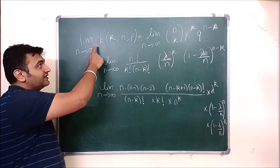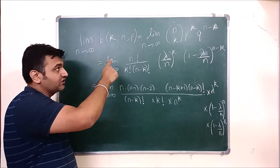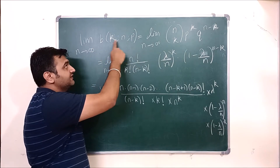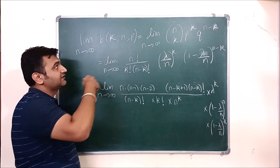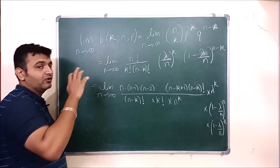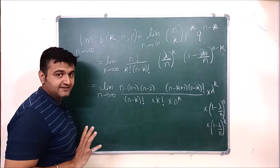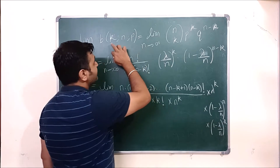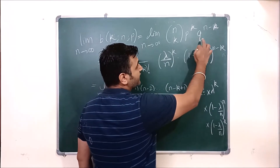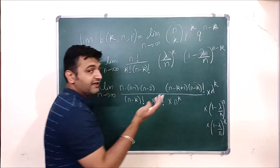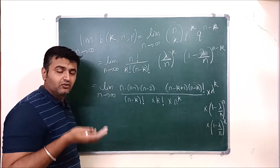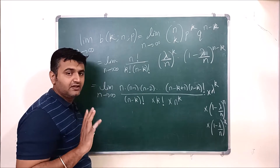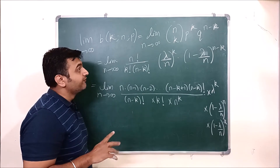So we take the limit as n goes to infinity of b, the binomial distribution, where n is the number of trials, p is the probability of success, and k is the number of successes we want to find the probability for. By formula, this is n choose k, times p raised to k, times q raised to n minus k. You can see my earlier lecture on binomial distribution if you have any queries or confusion.